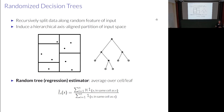A random tree estimator in the regression setting — the main setting of this talk — works as follows: for some new input x, you look at the neighbors in the same cell of the partition, and you average the outputs corresponding to the inputs that lie in the same cell. So it's a nearest-neighbor type estimator, where neighbors are determined by the random partition of your space — specifically, the training data that fall in the same cell as x.